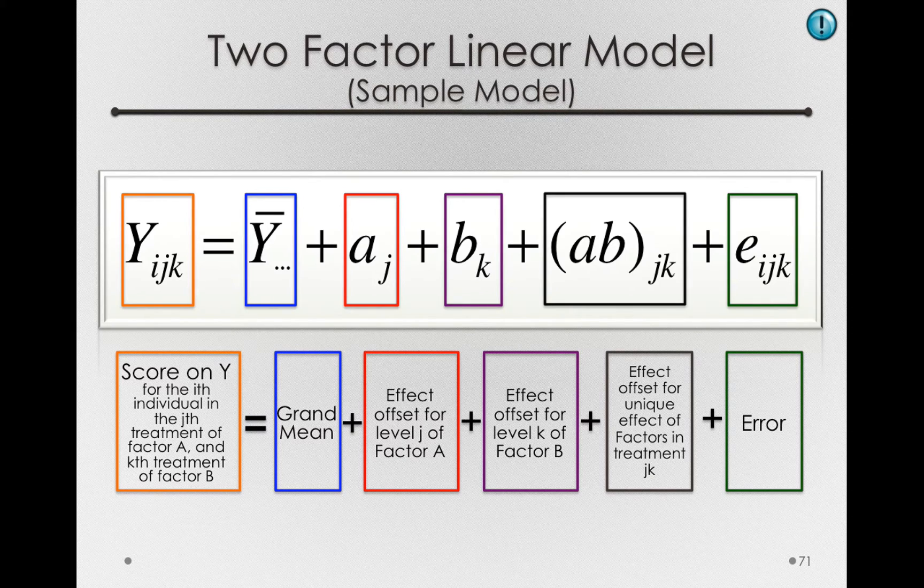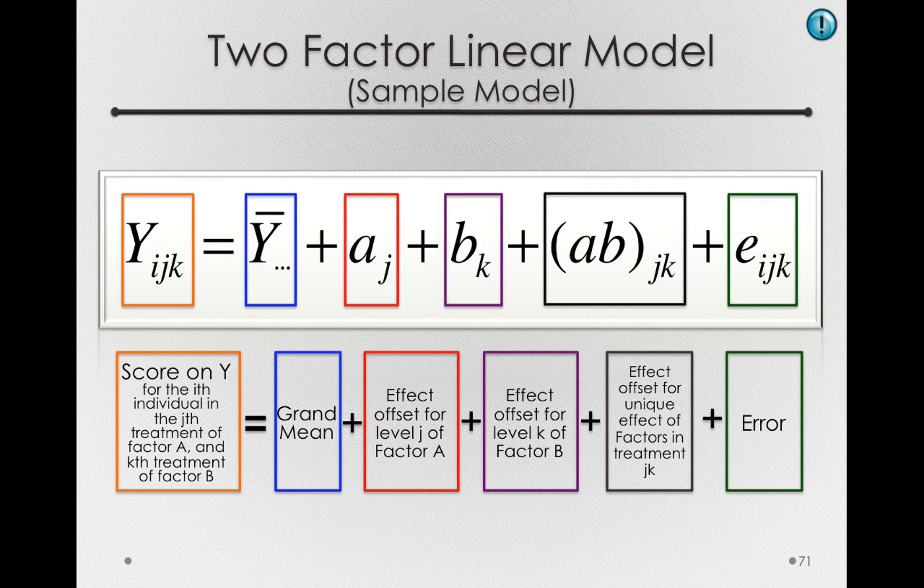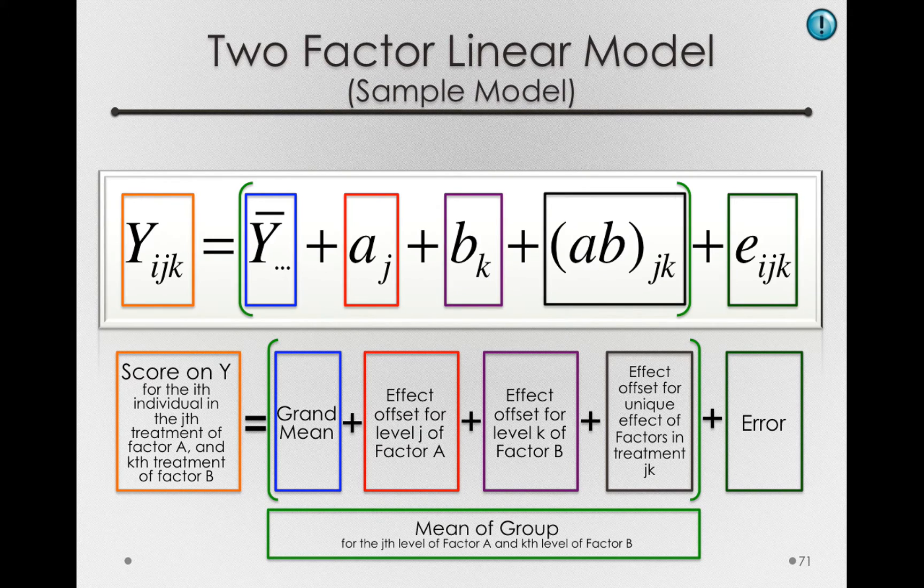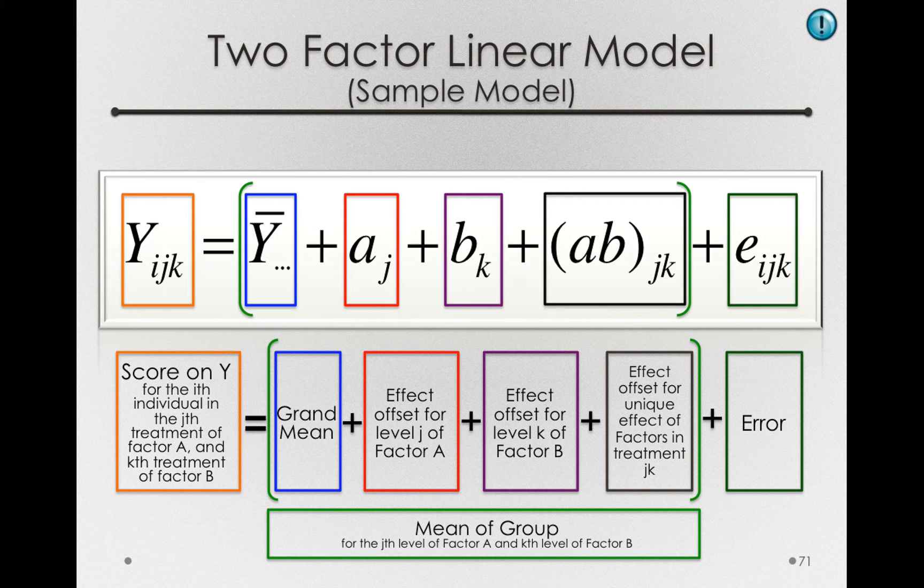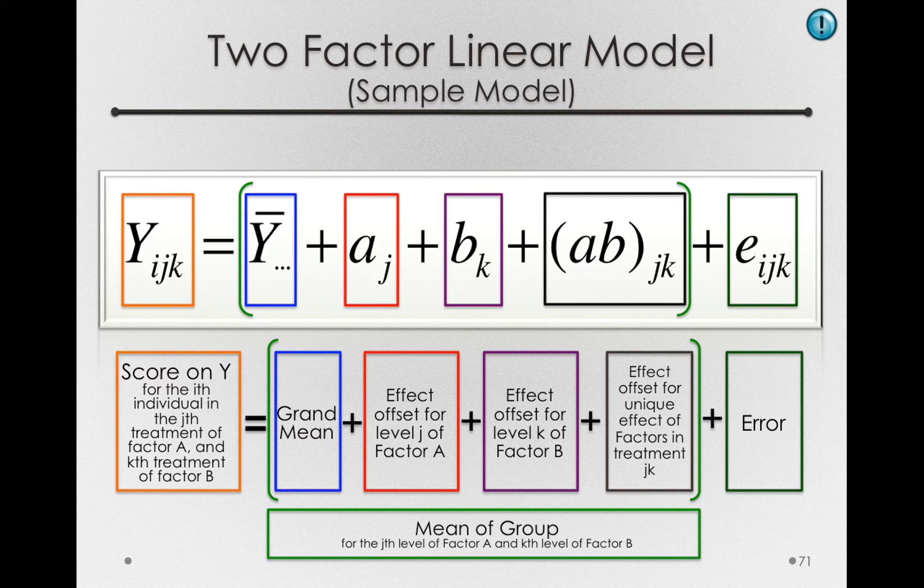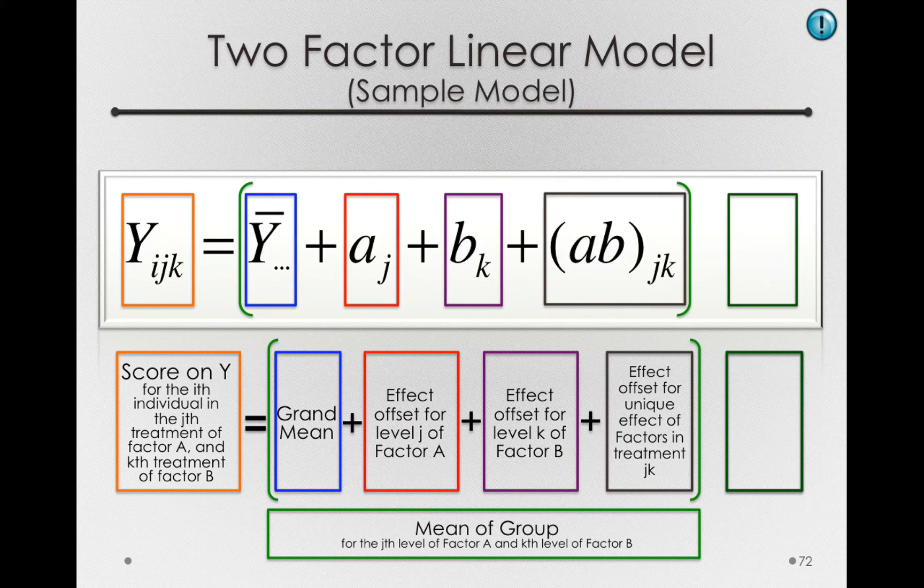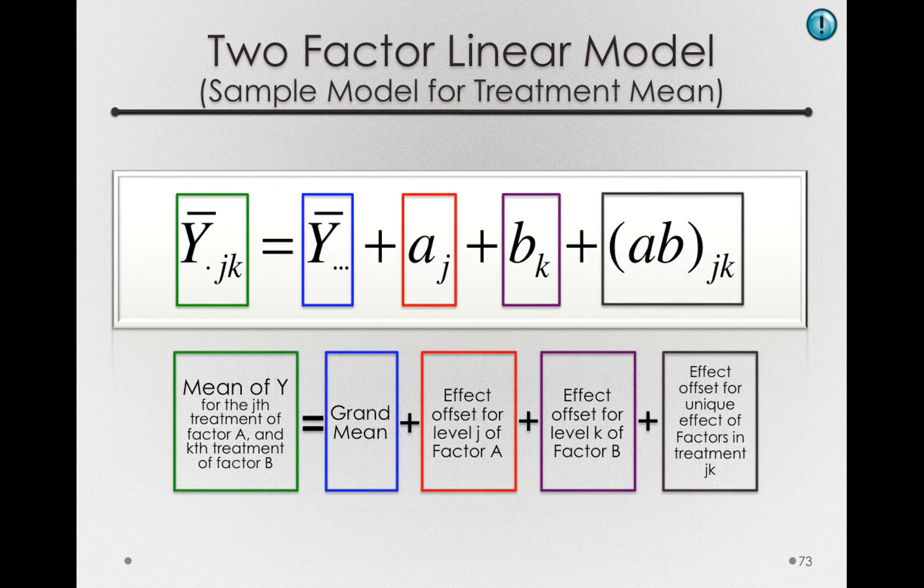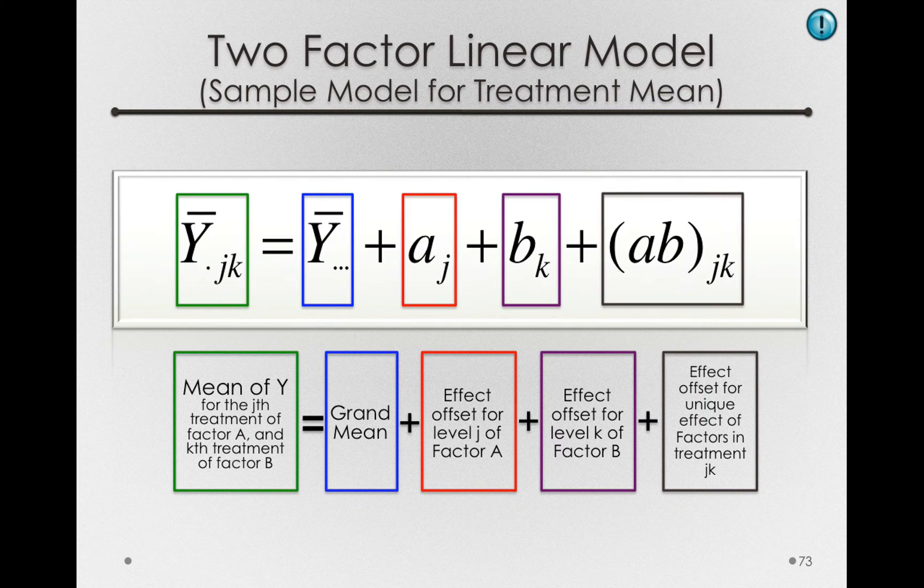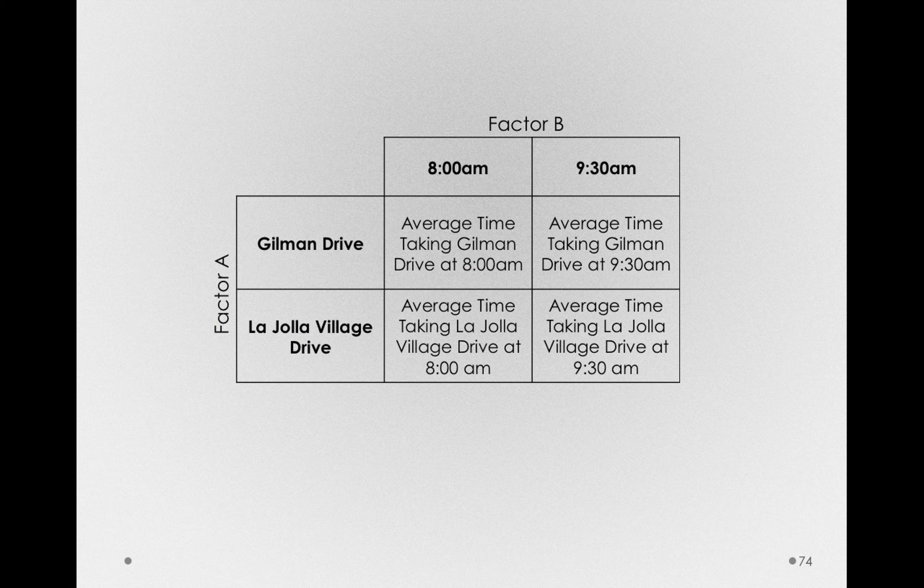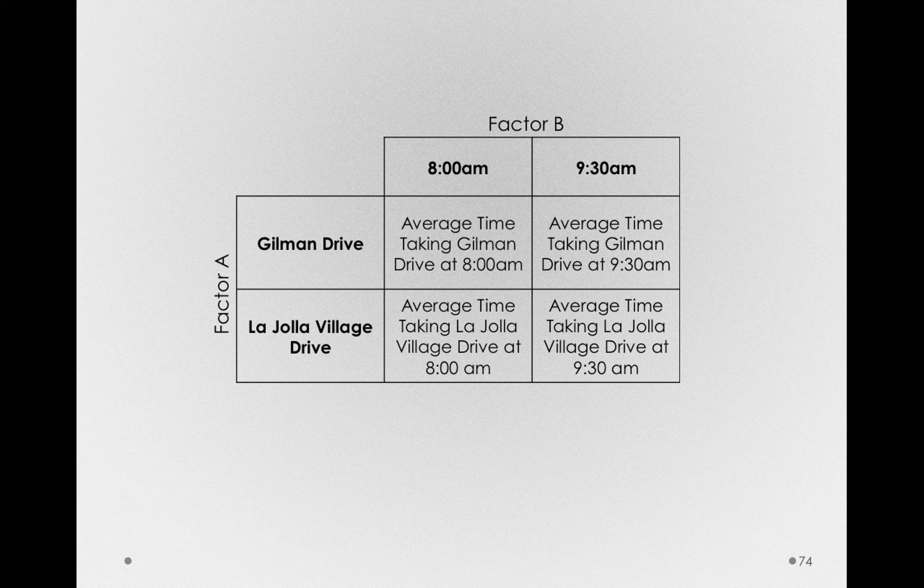Remember that this interior component is simply the mean of the group for the jth level of factor A and the kth level of factor B. So now, let's explore how we are decomposing the mean of each group into these separate pieces. That is, let's ignore for the moment individual error and talk specifically about the y bar dot jk's, the individual group means that we have for each combination of factor A and factor B.